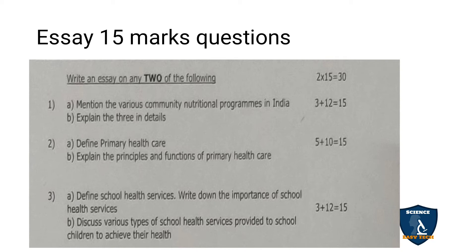1A: mention the various community nutritional programs in India — this is for 3 marks. And 1B: explain any 3 in detail, which carries 12 marks. So, 3 plus 12 equals 15 marks. Second question — 2A: define primary health care, which carries 5 marks. 2B: explain the principles and functions of primary health center, which carries 10 marks. So, 5 plus 10 equals 15 marks.